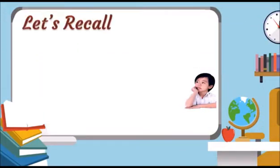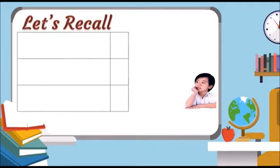Let's recall. Our two-digit numbers are 36, 33, 31. Let us show the corresponding base-ten blocks for each number.